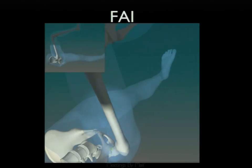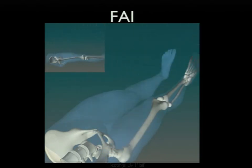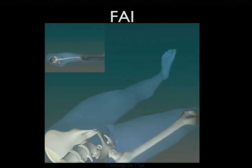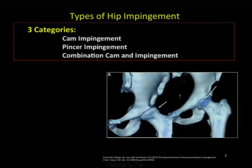This graphic shows the spot of impingement, which usually occurs with maximum flexion. There are three types: CAM, pincer, and what turns out to be more common—a combination of both CAM and pincer impingement.